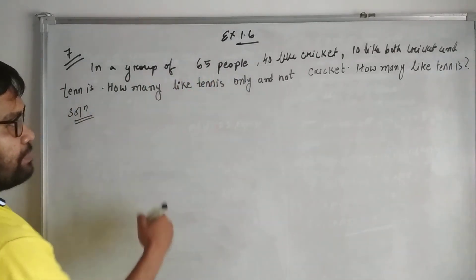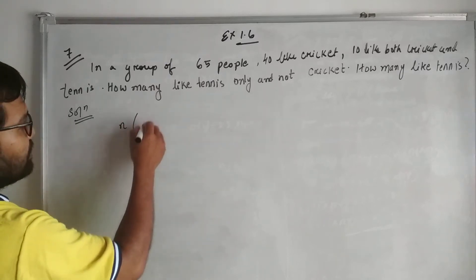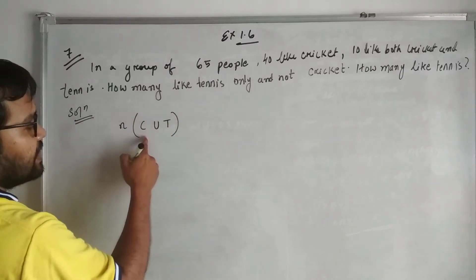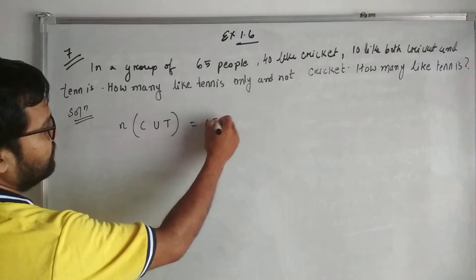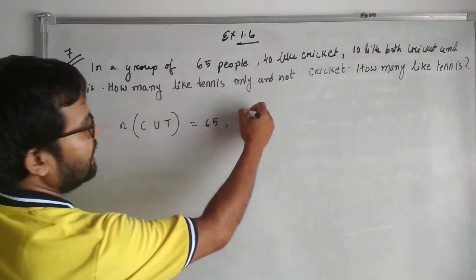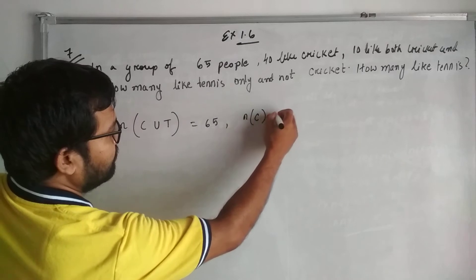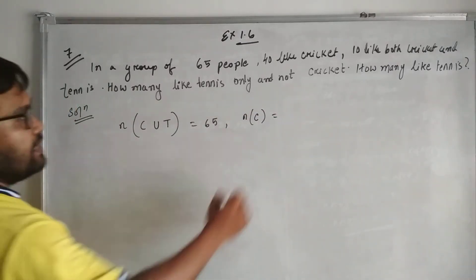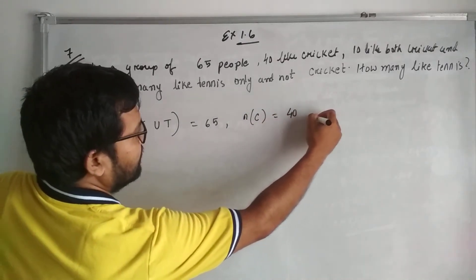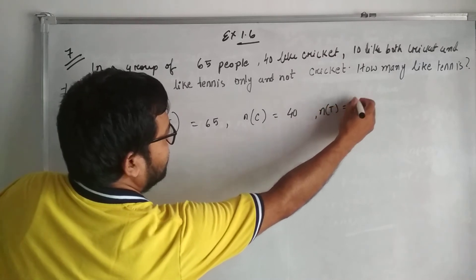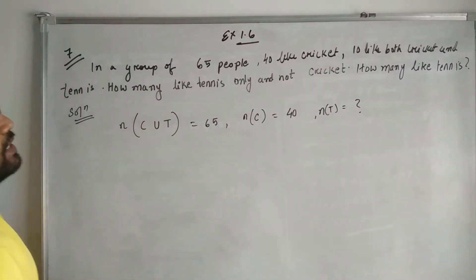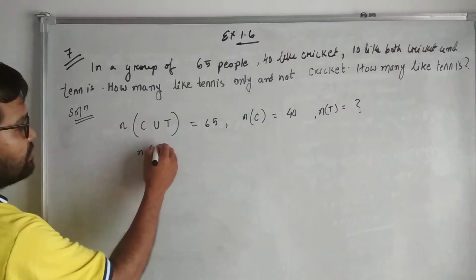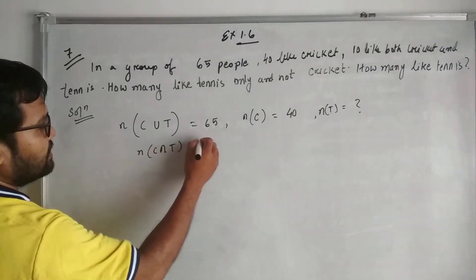That means n(C∪T), cricket union tennis, is 65. 40 like cricket, so n(C) = 40. Number of people who like tennis, we don't know - that's a question mark. And 10 like both, so n(C∩T) = 10.